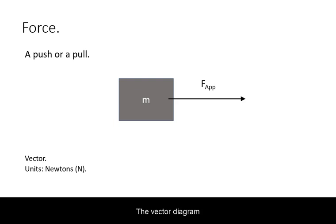The vector diagram for a force usually represents the object of a known or unknown mass, and the force labeled with F and the subscript depending on its type, and an arrow pointing in the direction that the force is applying on the object.